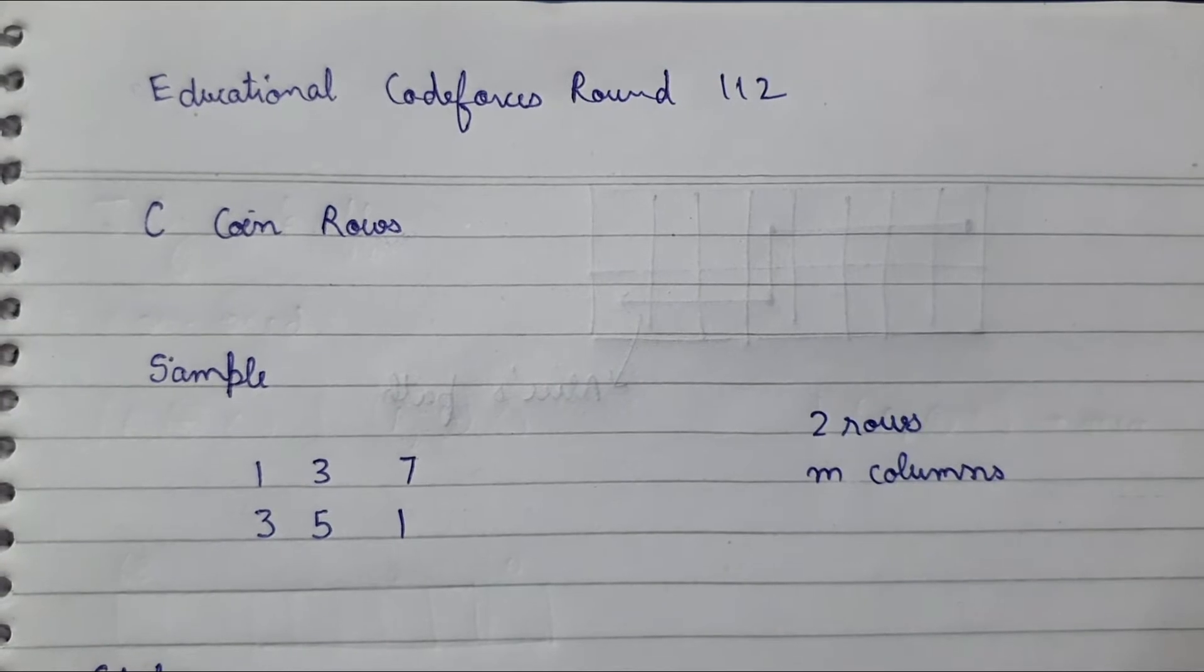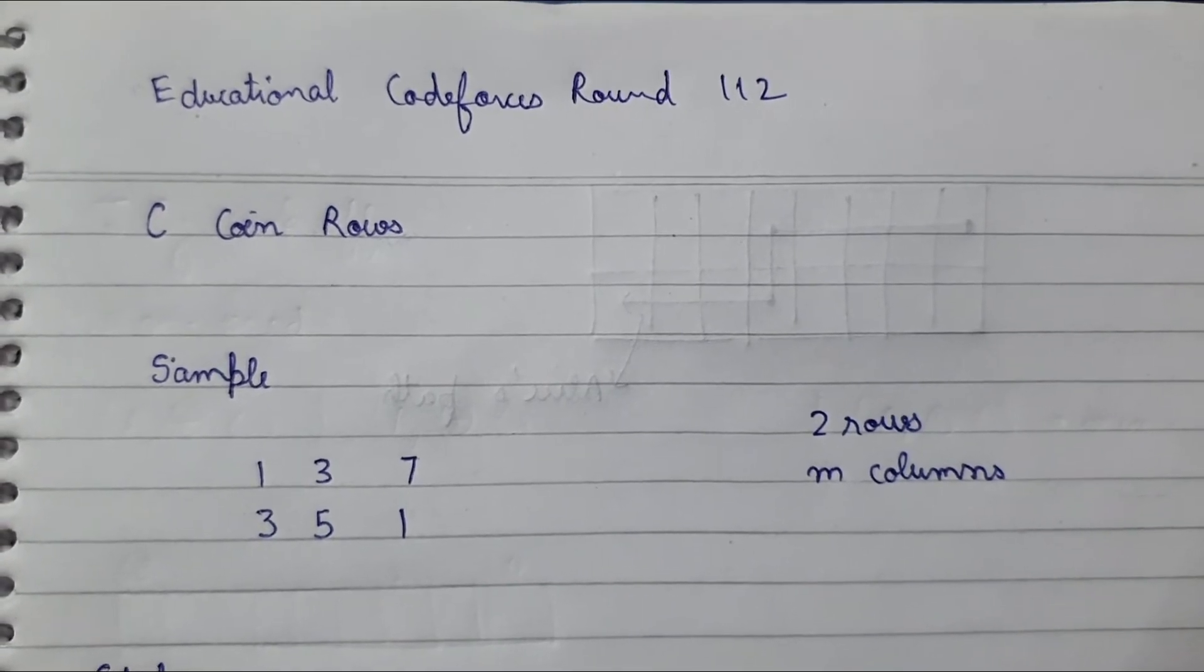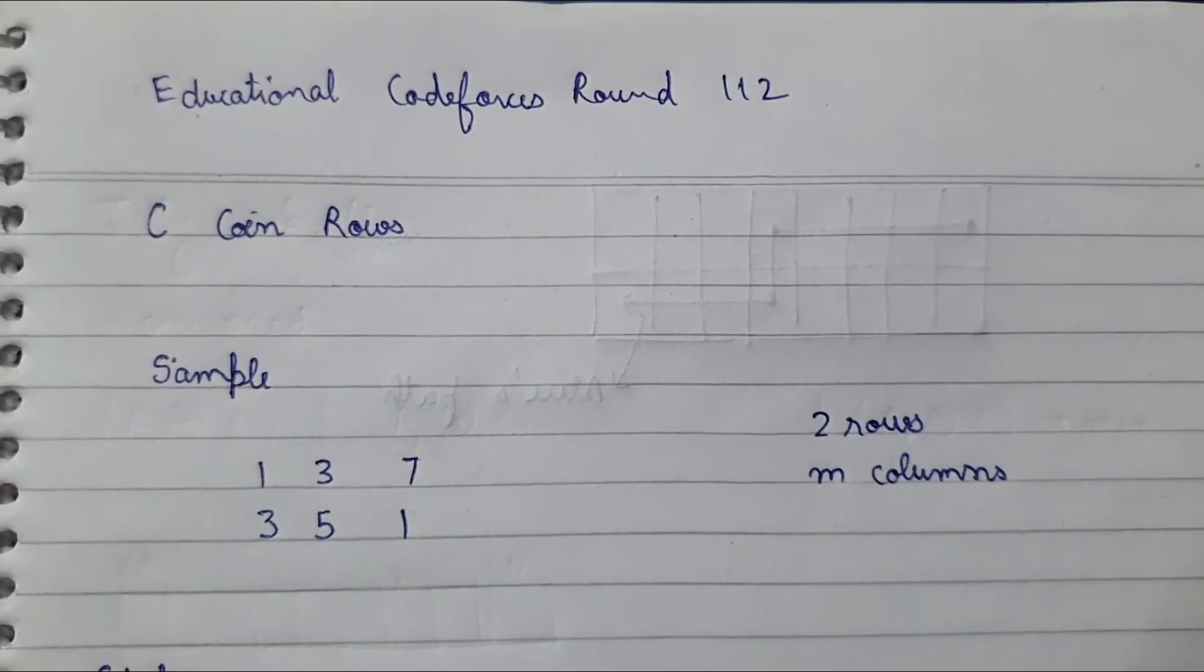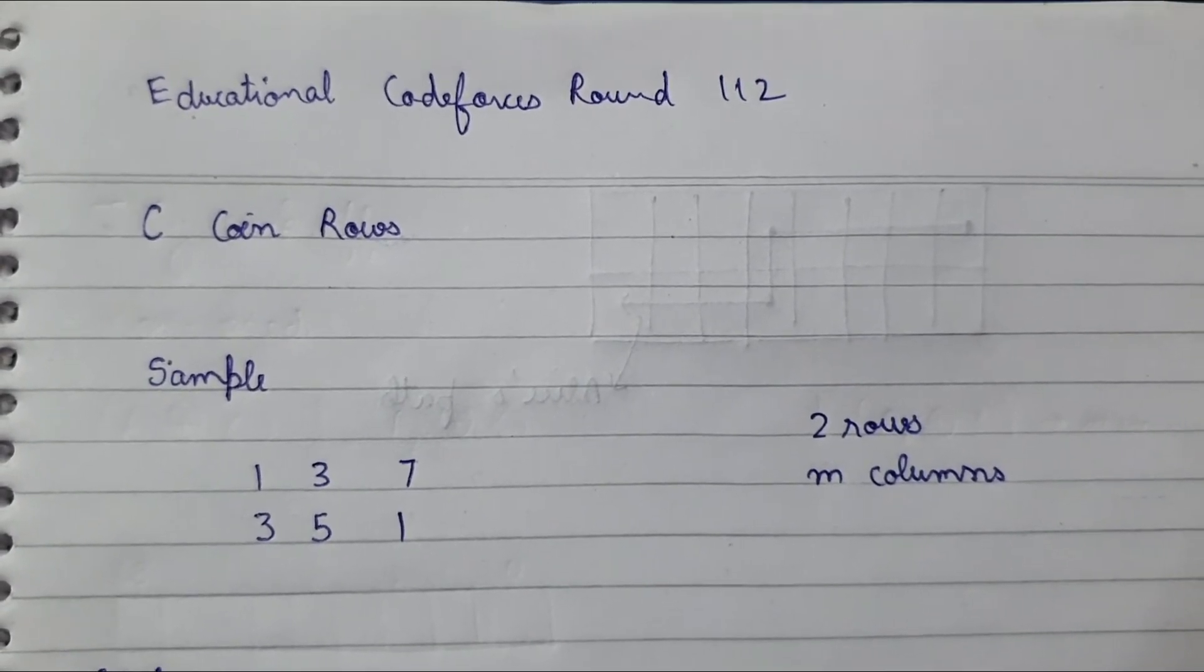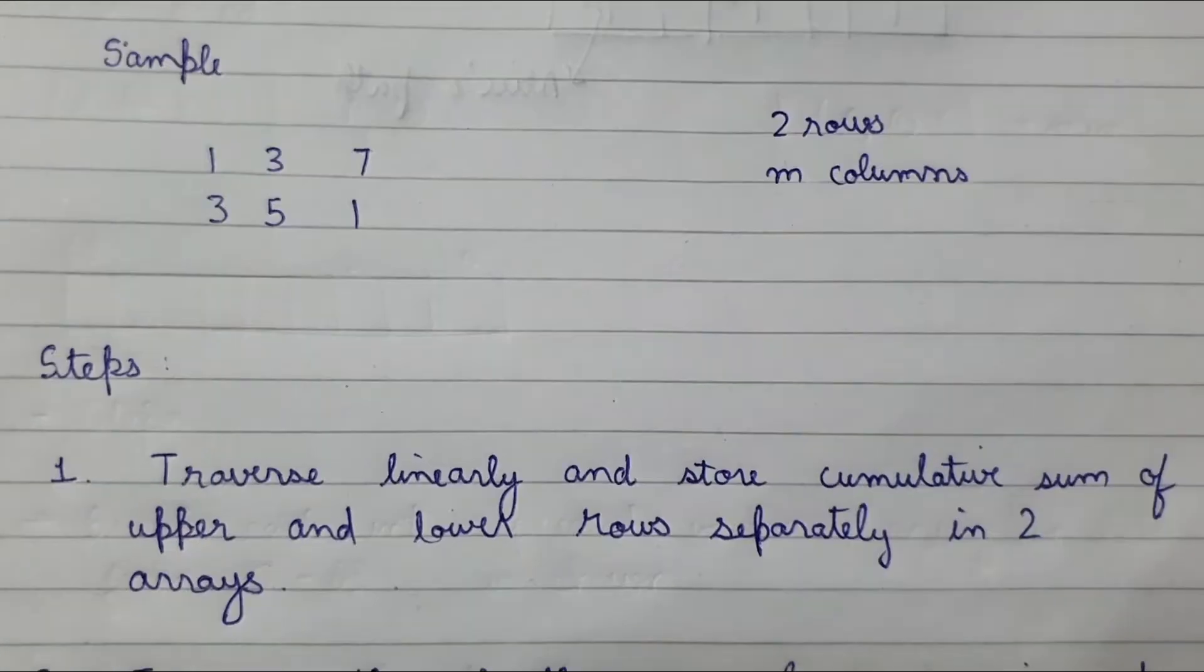But then Bob would be able to get a score of 8, but that is not the minimum Bob can get. Bob can get a minimum of 7 when Alice travels through 1, 3, 5, and 1.